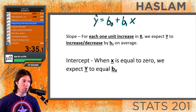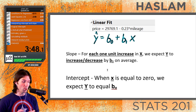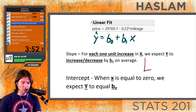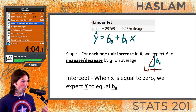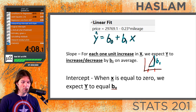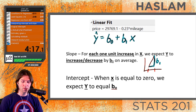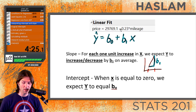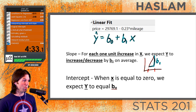When interpreting the slope: for each one unit increase in X, we expect Y to either increase or decrease by b1. A good way to remember this is that b1 corresponds to each one unit increase in X. In context: for each one unit increase in the mileage of a car, we would expect the price of the car in dollars to decrease by $0.23 on average.